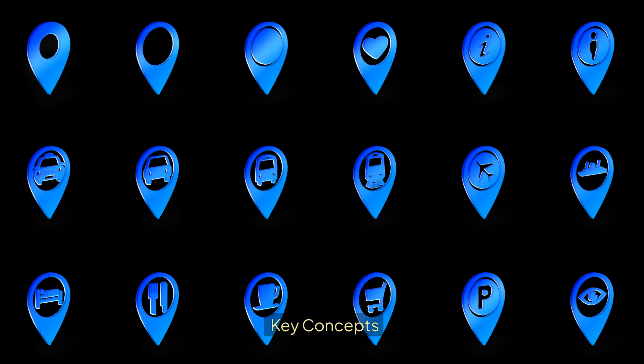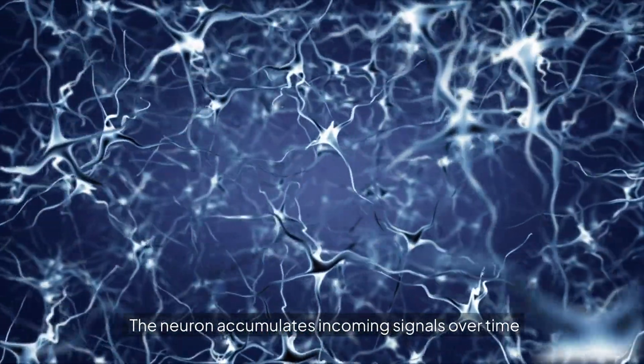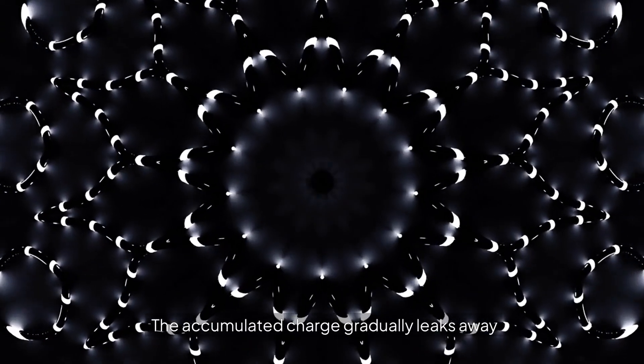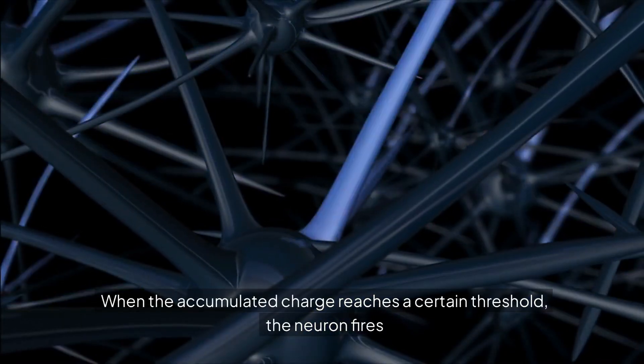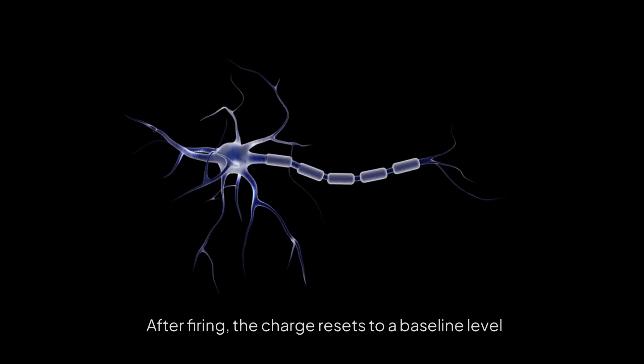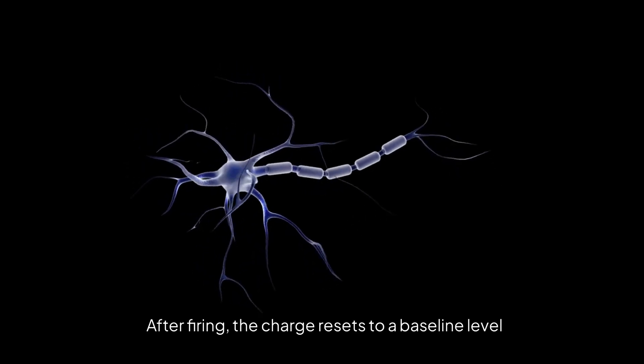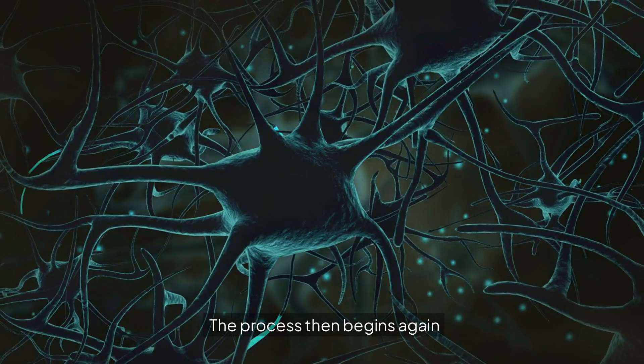Key concepts: The neuron accumulates incoming signals. Over time, the accumulated charge gradually leaks away. When the accumulated charge reaches a certain threshold, the neuron fires. After firing, the charge resets to a baseline level. The process then begins again.